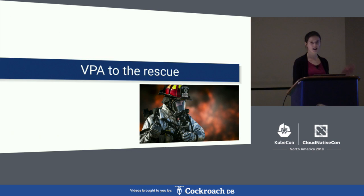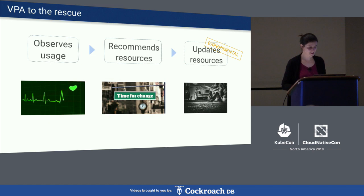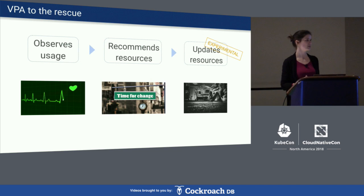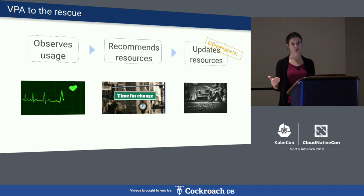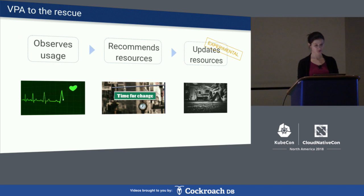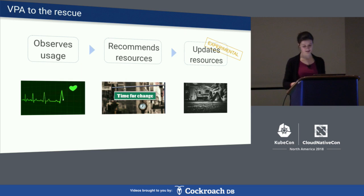So let me present the hero in all this unhappiness: Vertical Pod Autoscaler. It essentially does three main things. First, it goes ahead and looks at the actual usage of your applications while they run — the thing the Kubernetes scheduler never does. Then, based on these observations, it makes recommendations for what your workloads should actually be using. And then, if you configure it to do so, it will update the resource requests of your running workloads — though that last part is experimental.